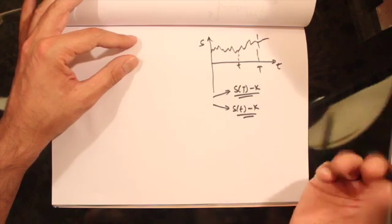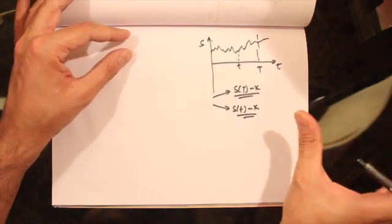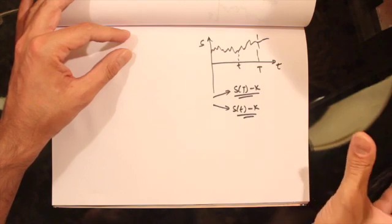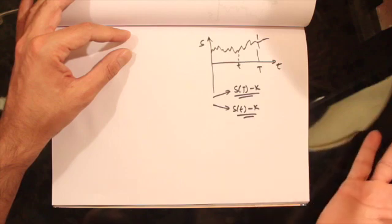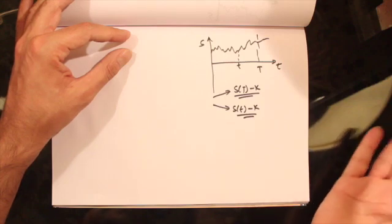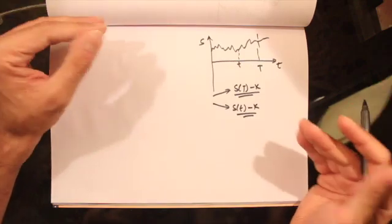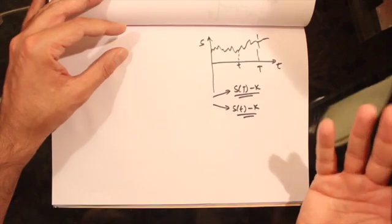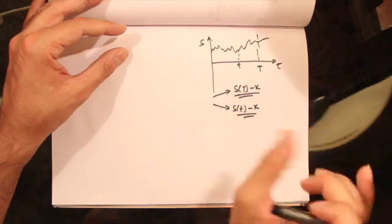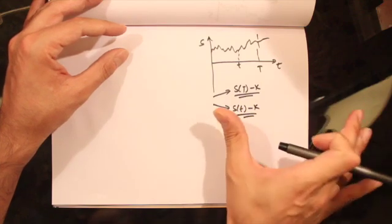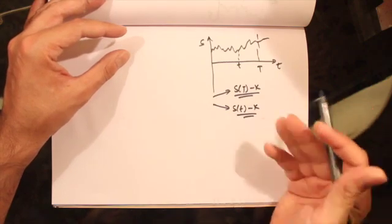There are certain cases where the early exercise feature is not very valuable. For example, for stocks with no dividend, the American option value is the same as a European option and the early exercise feature is not really valuable. But in most cases, the early exercise feature would be quite valuable, and in the next few lectures we want to understand how to price these American style options.